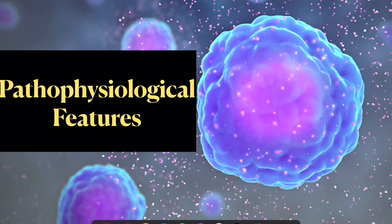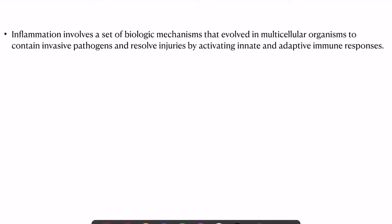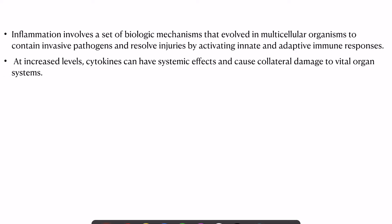Now let's look at the pathophysiological features of cytokine storm. Inflammation involves a set of biological mechanisms that have evolved in multicellular organisms to contain invasive pathogens and to resolve injuries by activating innate and adaptive immune responses. However, if this becomes deranged, very high levels of cytokines can have systemic effects and cause collateral damage to vital organ systems.